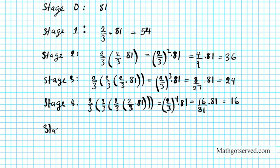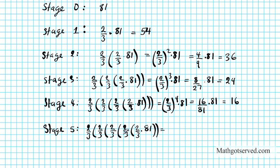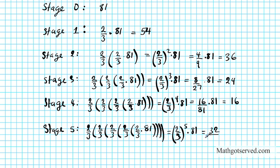For stage 5, what is the length? That's two-thirds of stage 4, which chains back to two-thirds of stage 0 which is 81 units long. We have (2/3)⁵ times 81. Two to the fifth is 32, divided by 3 to the fifth which is 243, times 81. 81 goes into 243 three times, so we have 32/3 for stage 5.